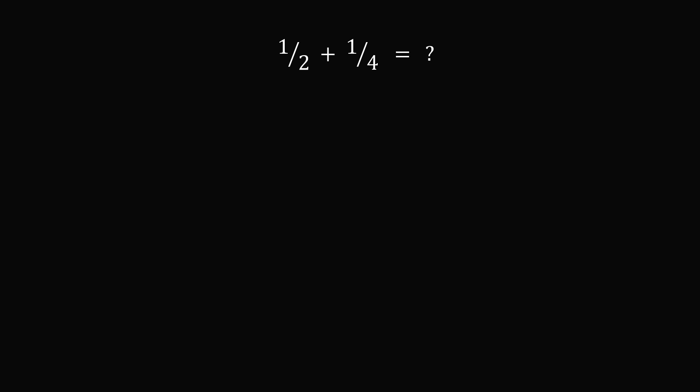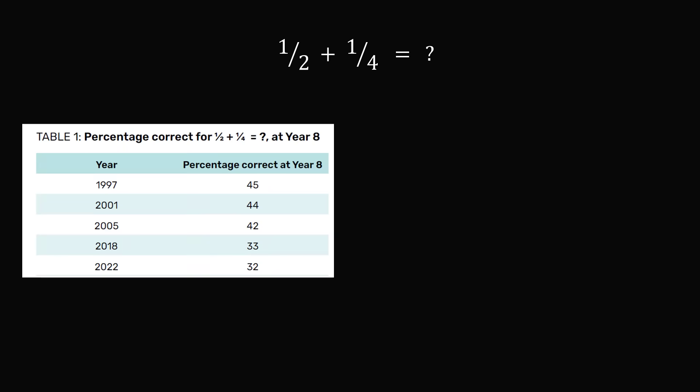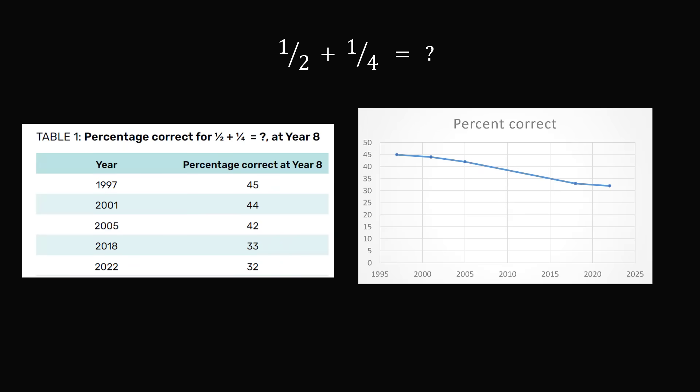So here's another question that was asked. What is 1 over 2 plus 1 over 4 equal to? It should be that every student gets the correct answer of 3 over 4. But here is how students at year 8 actually performed over time. In 1997, 45% selected the correct answer. But by 2022, only 32% of students got the correct answer. That's 1 in 3 students who were able to solve this simple fractions question.